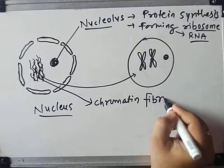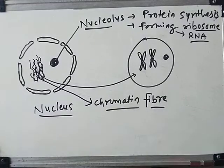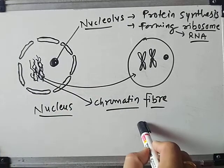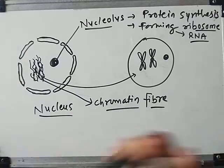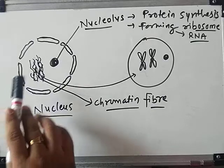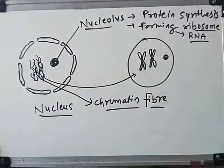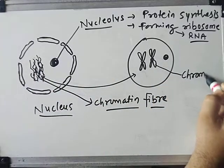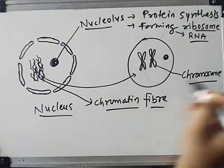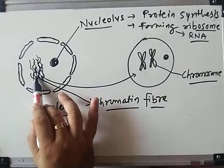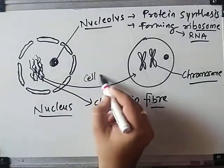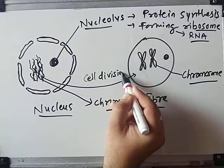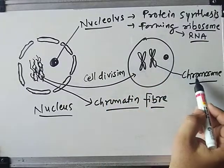Whenever you see the structure in a normal state without cell division, you can see chromatin fiber inside the nucleus. But when the cell is going to divide — in the division state — the chromatin fiber condenses into a condensed form named chromosome. So chromatin fiber is generally available as a thread-like structure, but at the time of cell division it converts into the condensed form named chromosome.